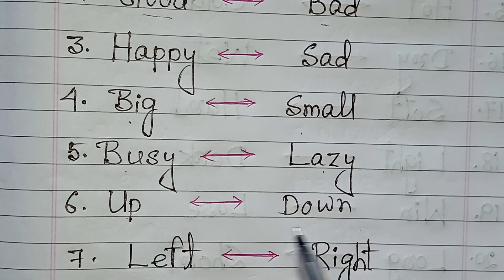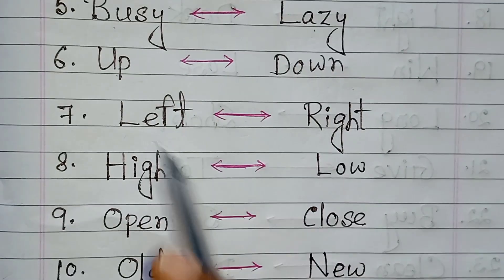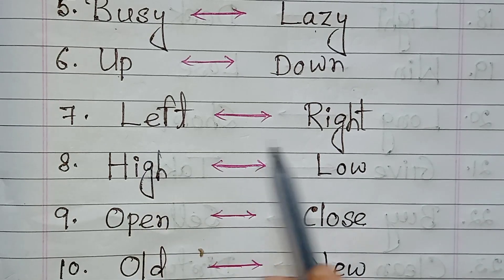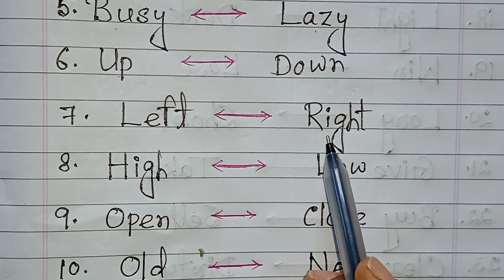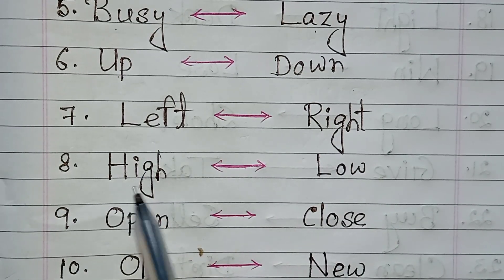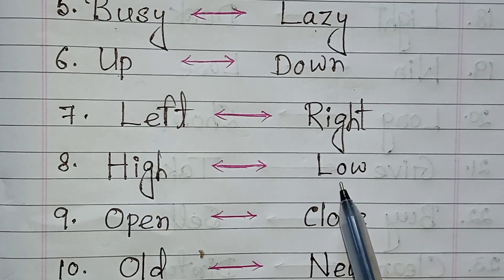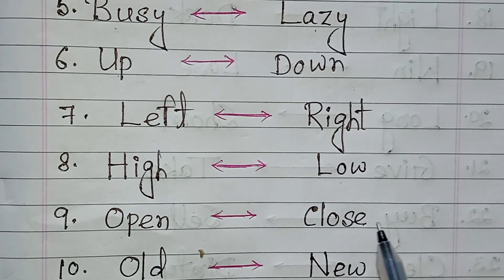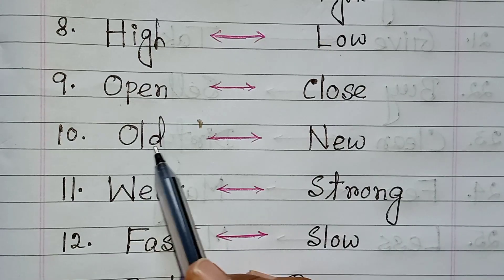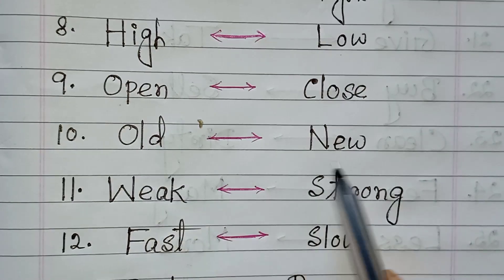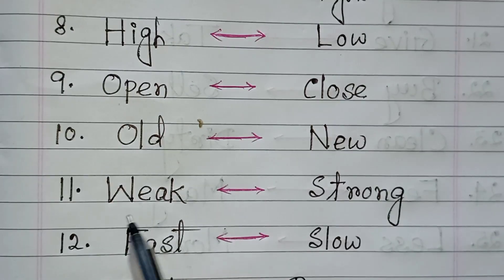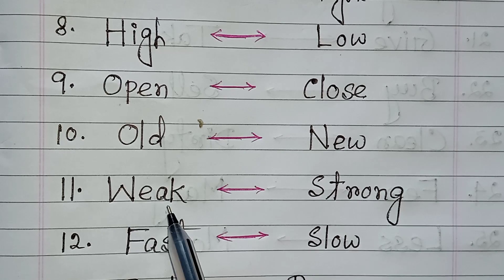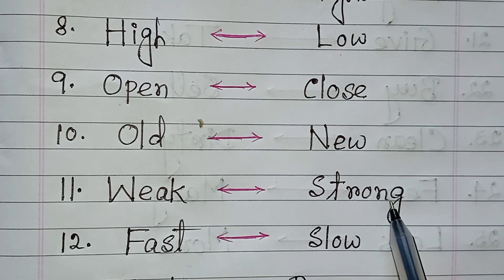Up, down. Left, right. High, low. Open, close. Old, new. Weak, strong.